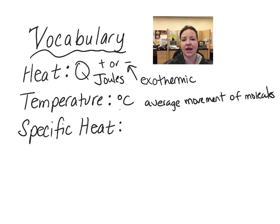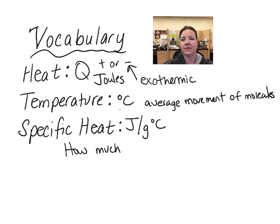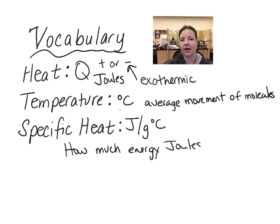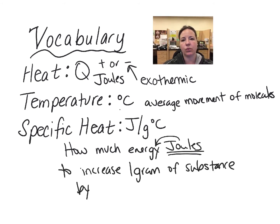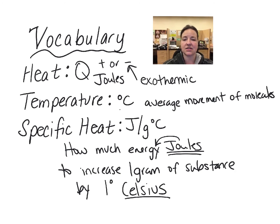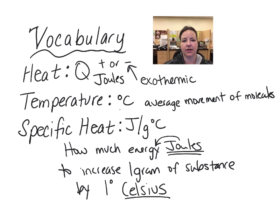Specific heat is calculated in joules per gram degrees Celsius, which means you're looking at how much heat energy in joules is going to be needed to raise one gram of that particular material by one degree Celsius. Each material has a different specific heat because the energy transfer for that particular material is going to be different from another material.